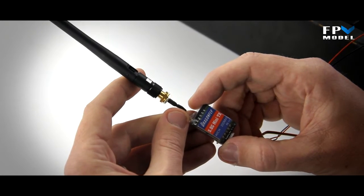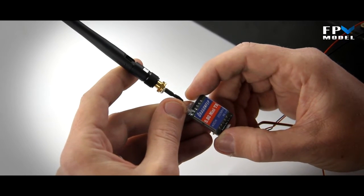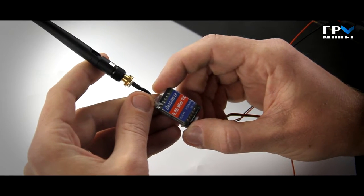All right guys, this is Jason with FPV Model. What we want to do today is give you a look at the new 5.8 gigahertz mini TX. This is 40 channels, so it does come with the race band channels on it.